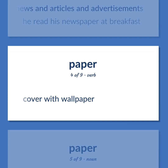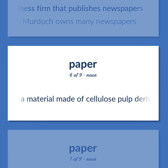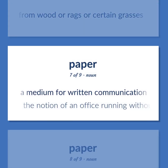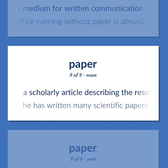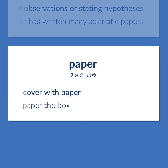Cover with wallpaper. Paper: a business firm that publishes newspapers — Murdoch owns many newspapers. A material made of cellulose pulp derived mainly from wood, rags, or certain grasses. A medium for written communication — the notion of an office running without paper is absurd. A scholarly article describing the results of observations or stating hypotheses. He has written many scientific papers. Cover with paper.